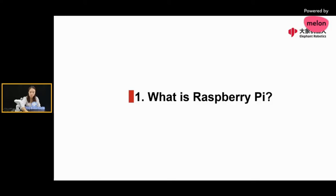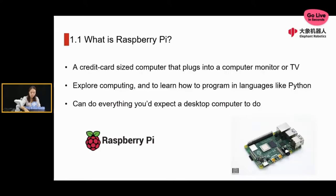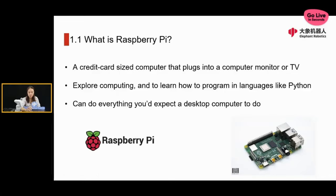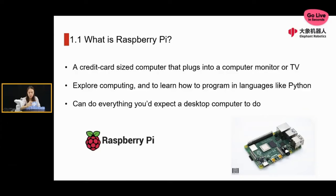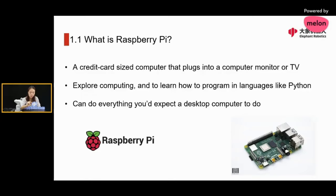The first section is about Raspberry Pi. So what is Raspberry Pi? In this picture in the right corner, you can see a Raspberry Pi. Raspberry Pi is a company but it has many products, and it mainly produces a computer processor. It's a very small credit card-size computer that you can plug into a computer monitor or TV. You can also use a keyboard or mouse — that's supported.